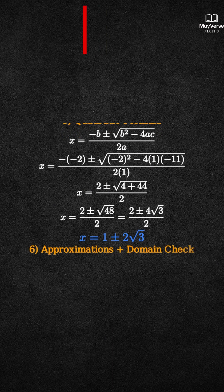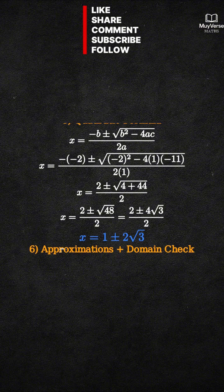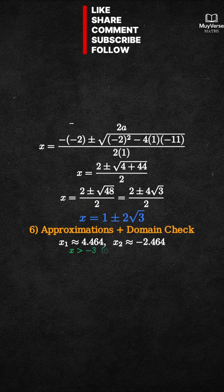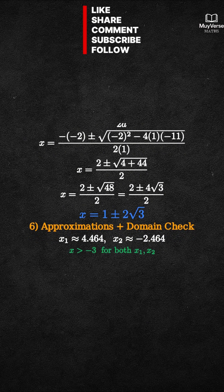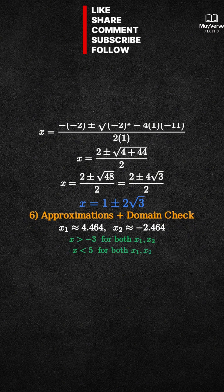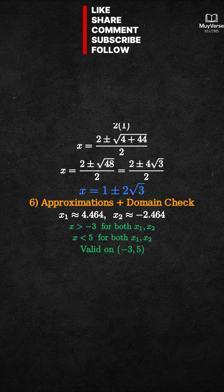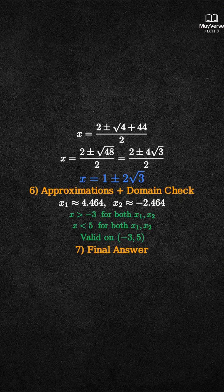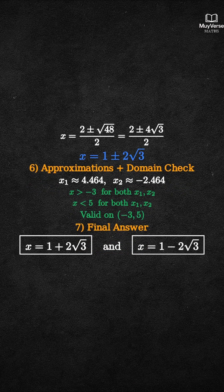Step 6: Compute approximations and check the domain. The approximate values are x₁ about 4.464 and x₂ about minus 2.464. Both numbers are greater than negative 3 and both are less than 5. Therefore, both solutions belong to the interval negative 3 to 5 and are valid. The solutions are x equals 1 plus 2 root 3, and x equals 1 minus 2 root 3.